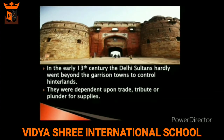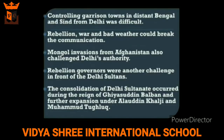Now let's understand how the fortified town of Delhi expanded and became the empire of the Delhi Sultanate. In the early 13th century, the Delhi Sultans hardly went beyond the garrison towns to control the hinterlands, and they were dependent upon trade, tribute, or plunder for supplies. Controlling garrison towns and distant Bengal from Delhi was very difficult because bad weather could break communication. Mongol invasions from Afghanistan also challenged Delhi's authority.